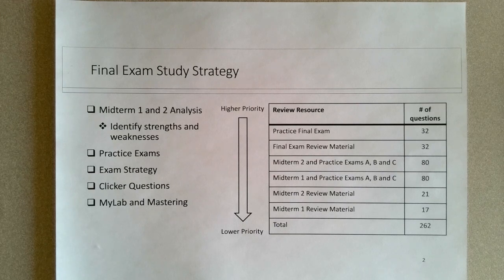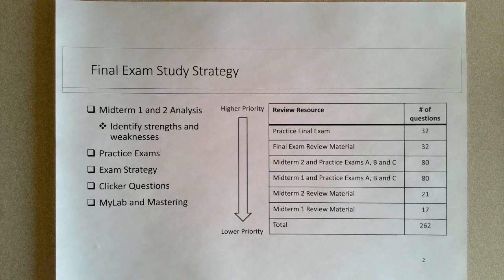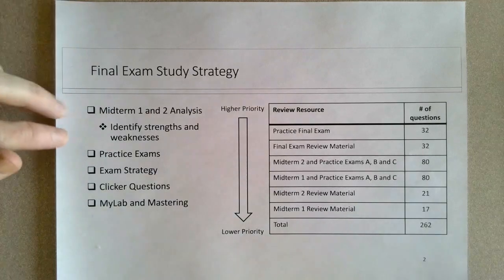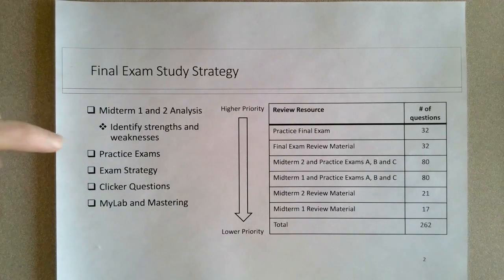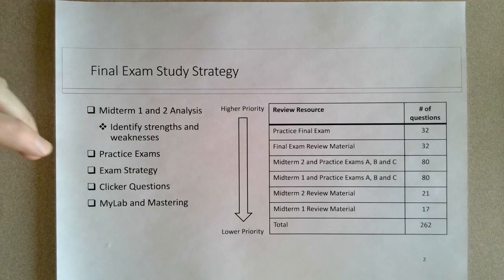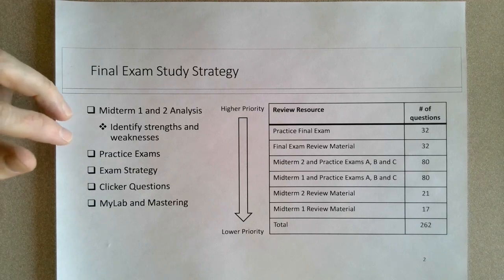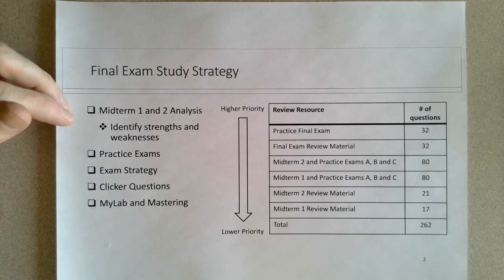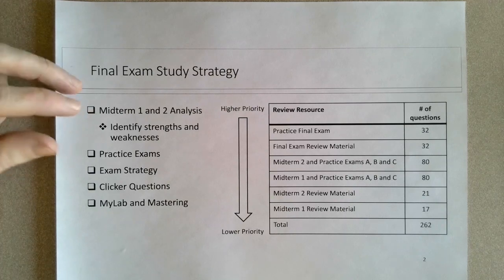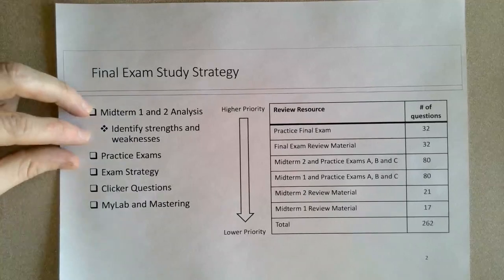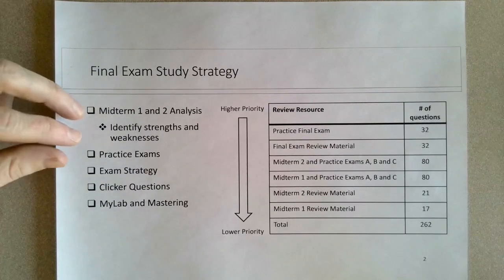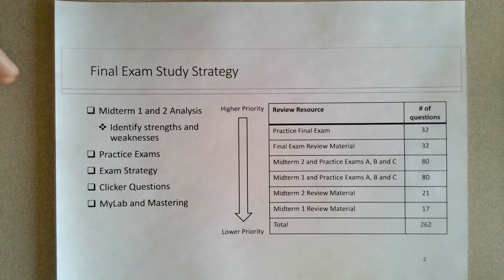For those students who have seen me in office hours, I've highlighted this. I first stressed doing a thorough analysis of the first two midterms. So I first wanted to figure out strengths and weaknesses from the first two midterms — what questions you were getting correct, what questions you were getting incorrect — and try to identify any patterns or trends in the way you solve problems. Assuming you're not happy with how things went in the first two, or you feel like you want to make improvements, you have to first identify where the mistakes were made.